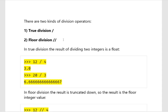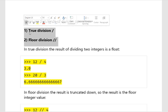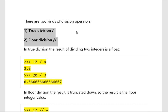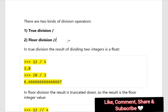Hello guys, welcome back to our channel CSE Concepts with Parinita. In today's video we are going to learn different types of division operators in Python. The main two kinds of division operators we use in Python are true division and floor division. True division is denoted by one slash and floor division is denoted by double slash. We will see how they work with integer numbers, floating numbers, negative and positive numbers.